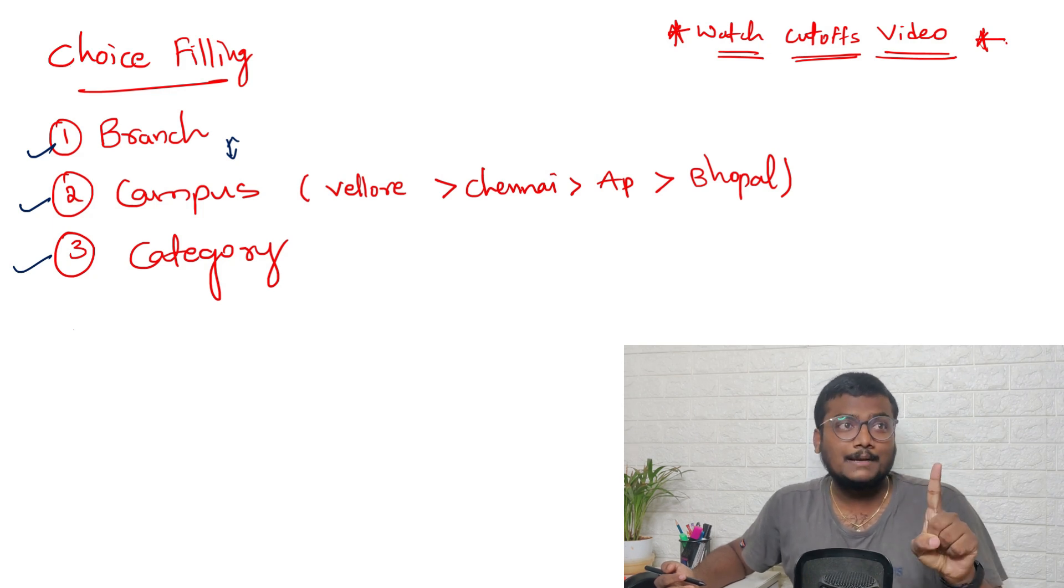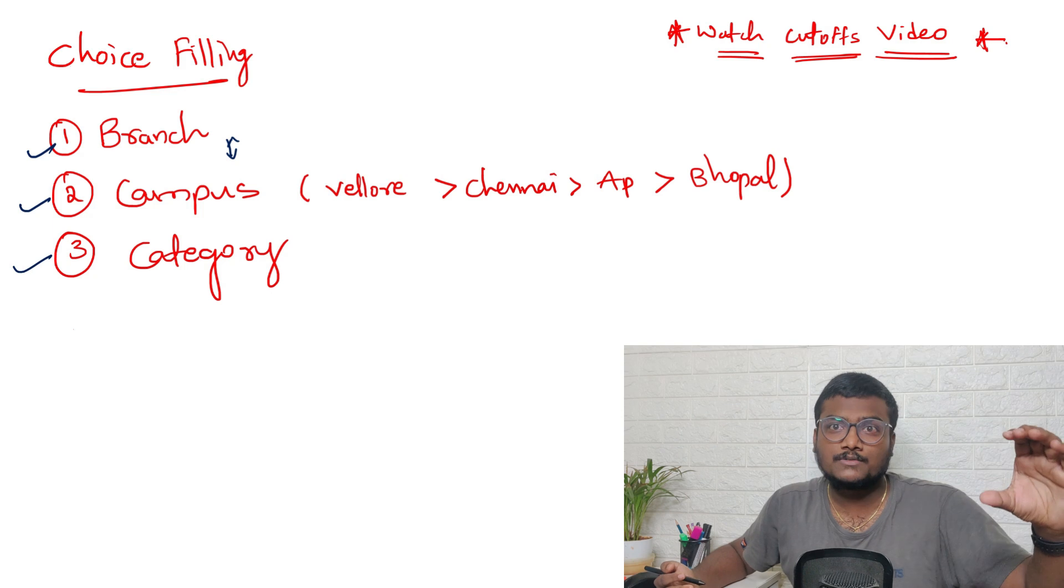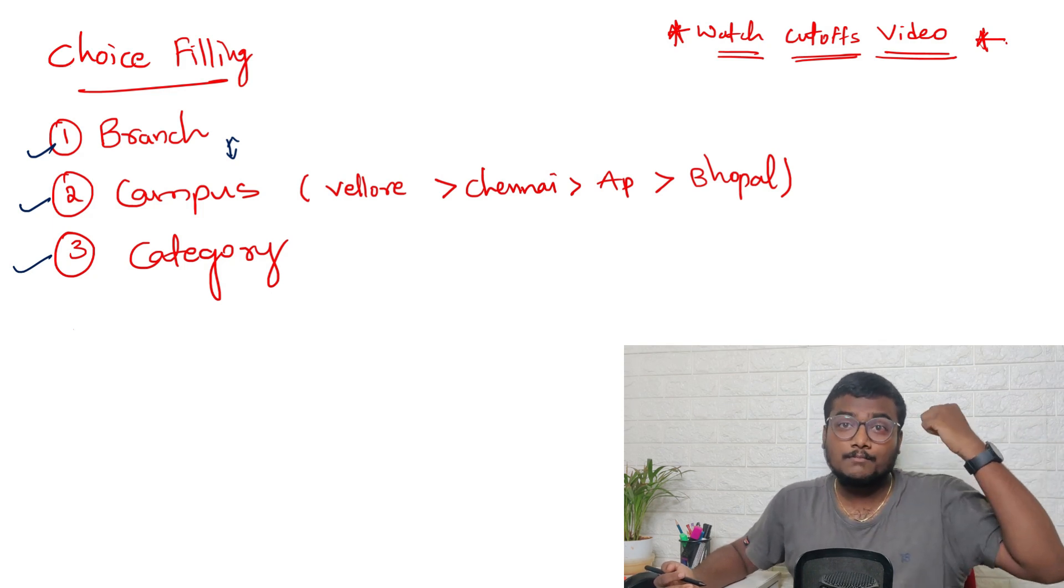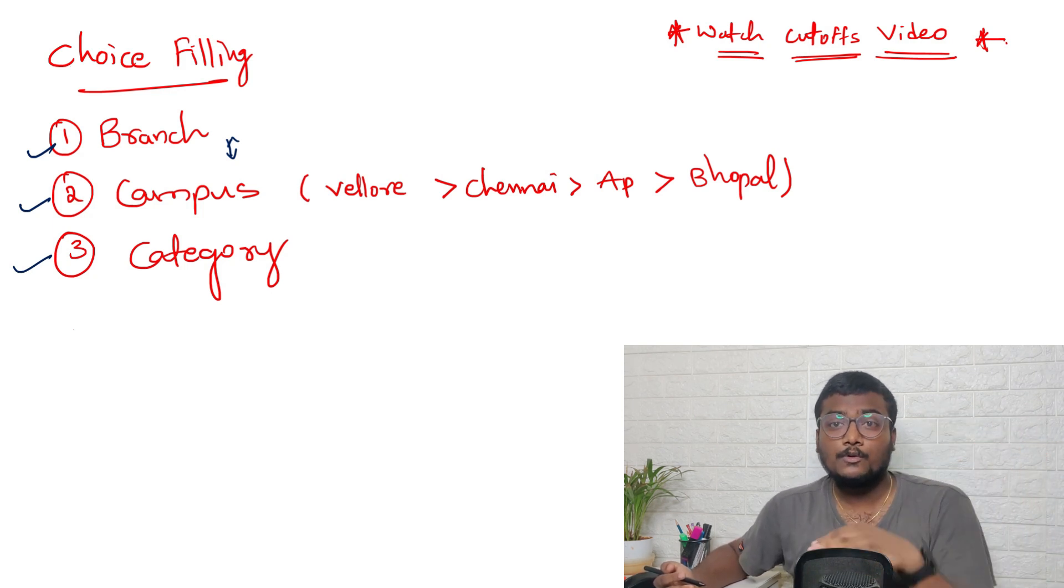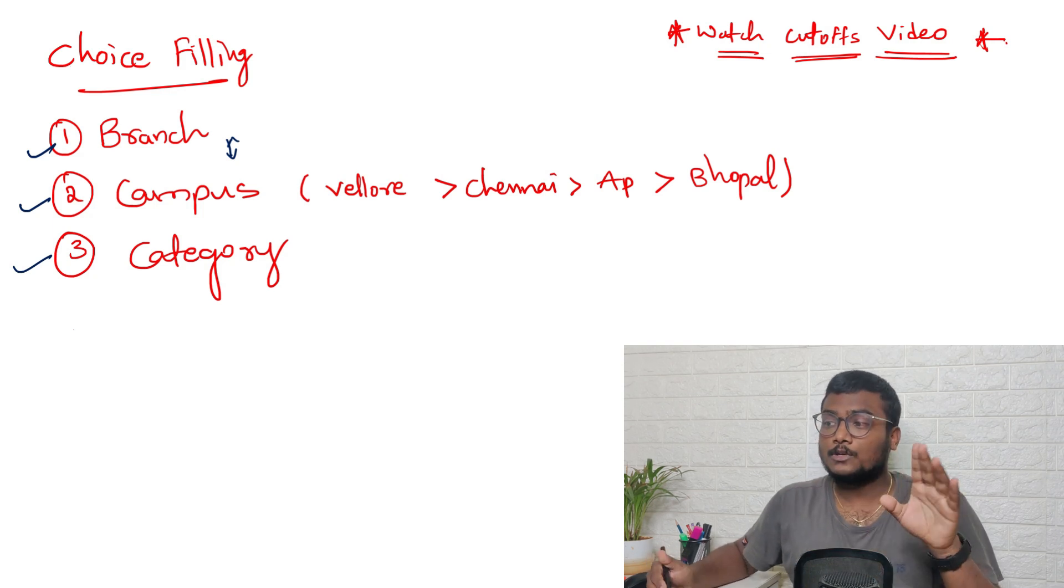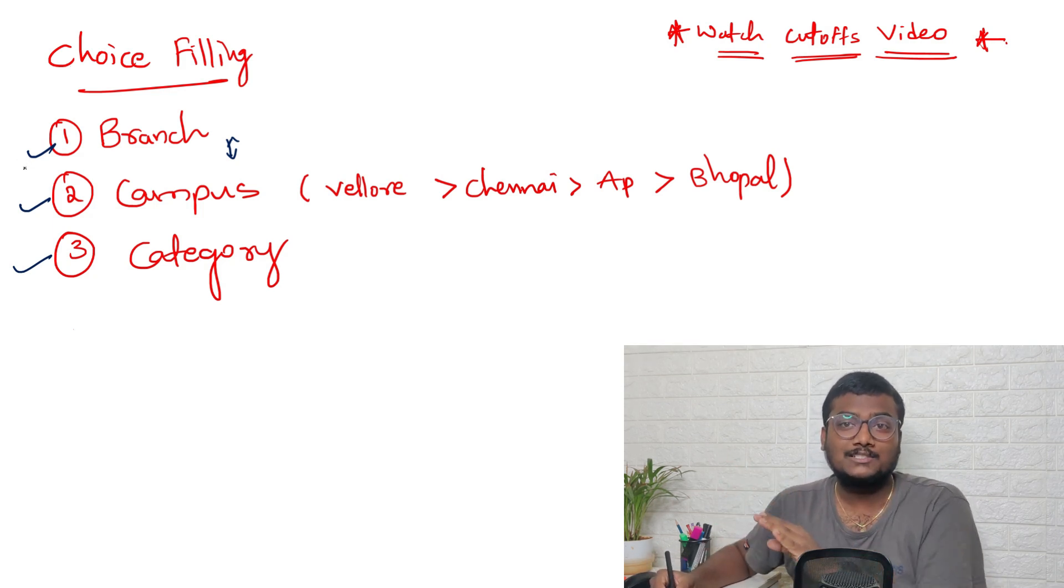You need to have your own preference - whether you want a branch, meaning you're really focused towards one branch, or whether you want the best campus. That's up to you, whatever you want. I'm not saying one, two, three is the preference order - it's just how I wrote it.